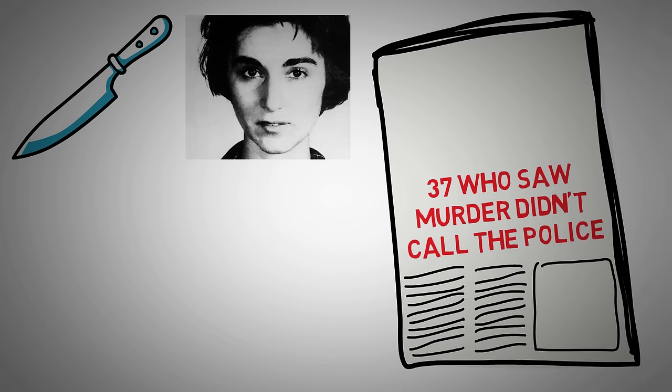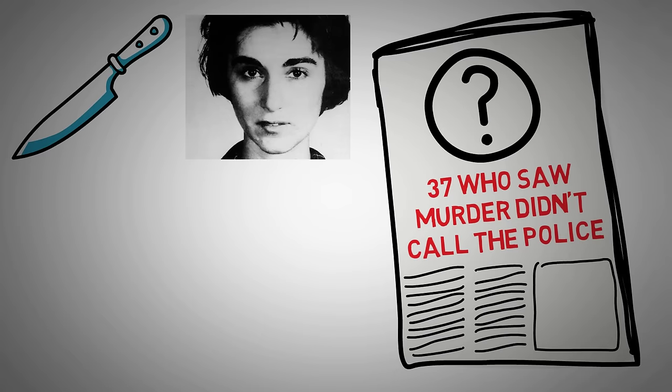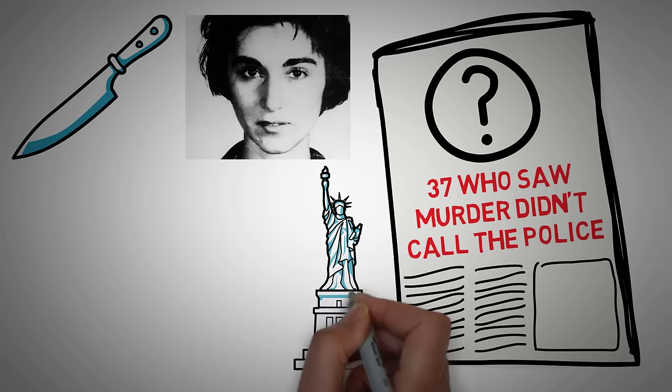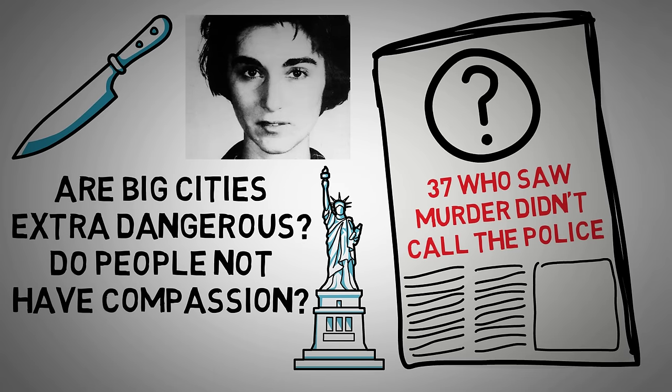This headline shocked the world because how could 37 people fail to take action when something so horrific was happening? Does this mean that cities like New York were extra dangerous? Do people not have compassion? These are some of the questions that psychologists have been trying to answer ever since the 1960s.